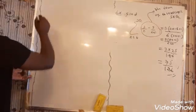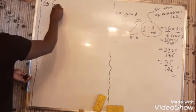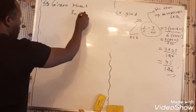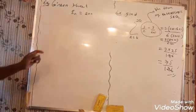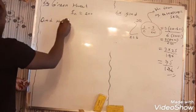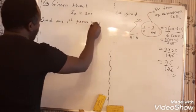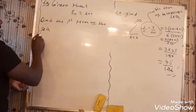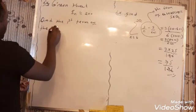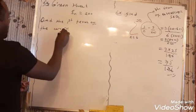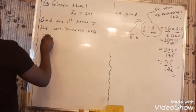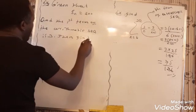Now let's add one more example — the third example. Given that the sum of the first 20 terms of an arithmetic progression is some value, and the first term of the arithmetic sequence is 3, find the common difference.